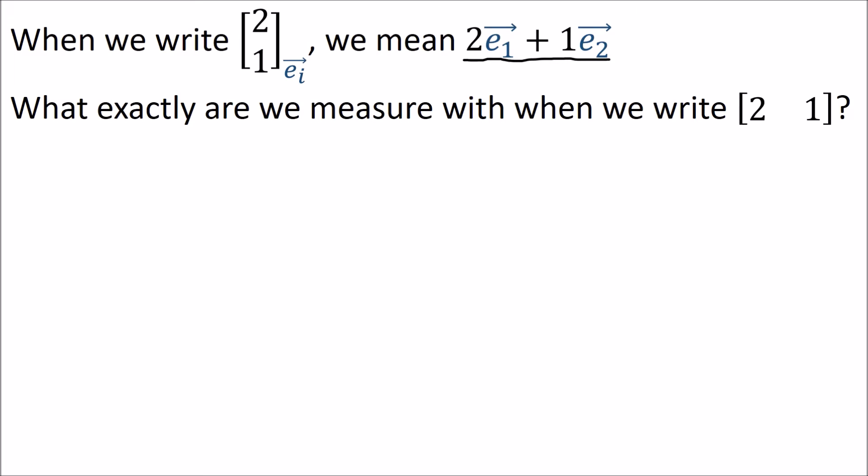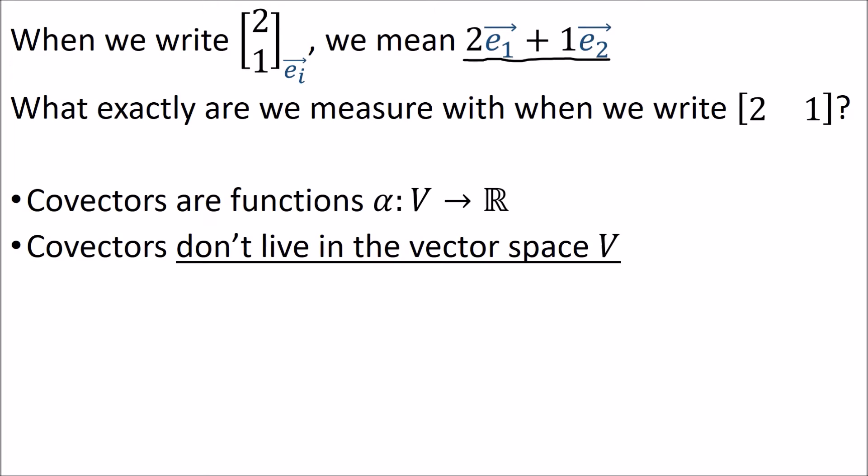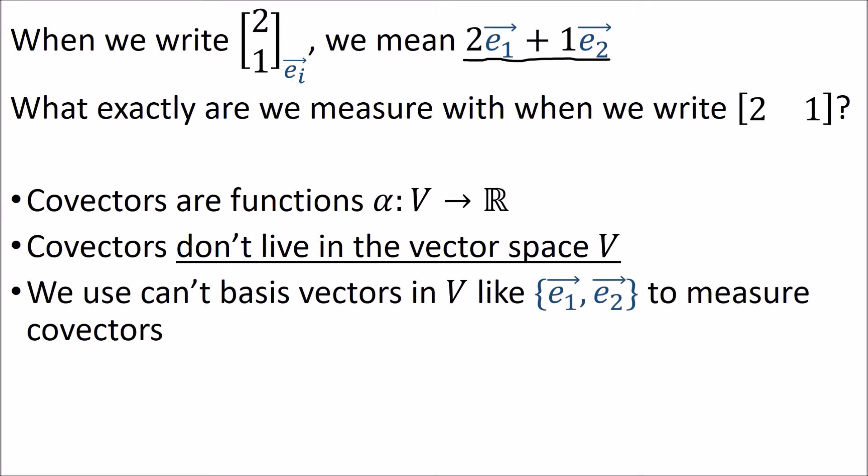Remember covectors are functions from the vector space V to numbers. Covectors don't live in the vector space V—they take vectors in V as inputs. So we can't use basis vectors in V to construct covectors. So what do we do?